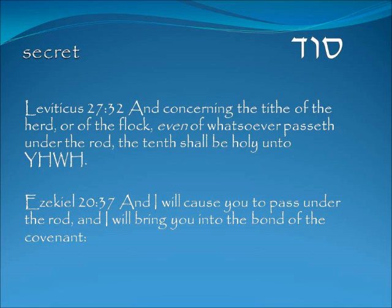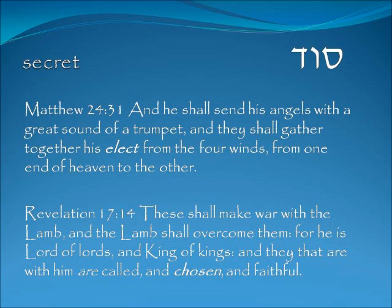Ezekiel 20:37 — 'I will cause you to pass under the rod, and I will bring you into the bond of the covenant.' So in the future there will be an examination to see whether you are in fact of the elect. Matthew 24:31 — 'He shall send his angels with a great sound of a trumpet, and they shall gather together his elect from the four winds, from one end of heaven to the other.' Revelation 17:14 — those with the Lamb are 'called' — the ekklesia — and 'chosen' — the eklektos — and also 'faithful,' those who have kept his word and commandments.